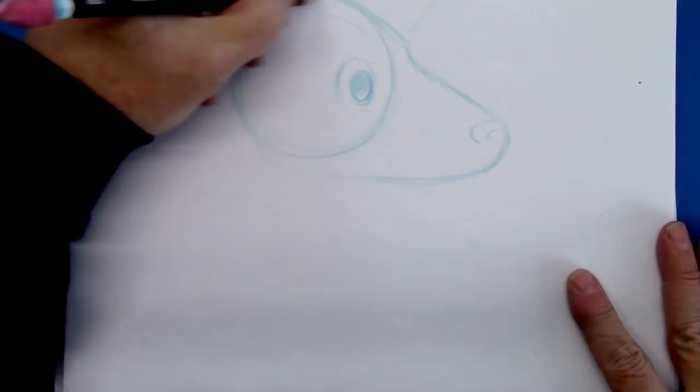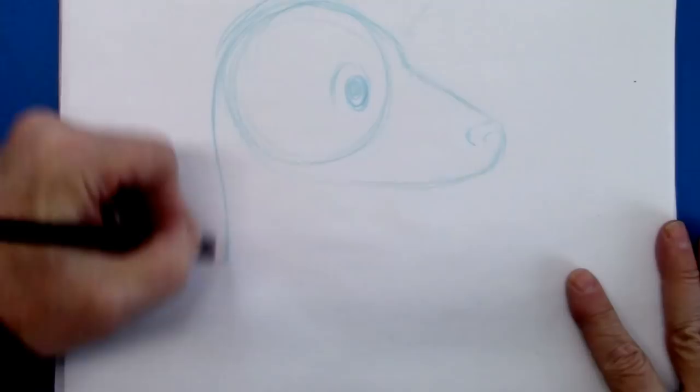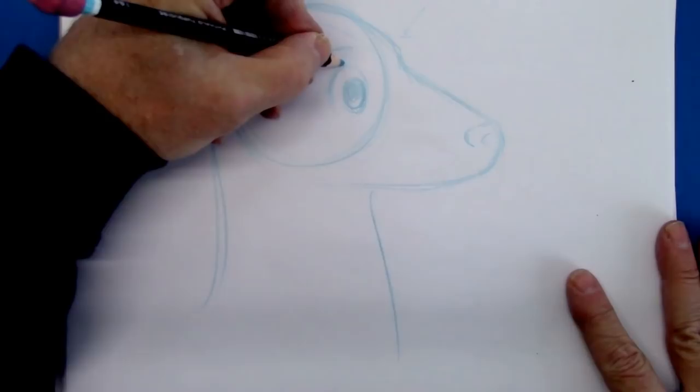Big glistening eye. We're going to do this first in blue, and then we will finish it up in a black pencil.